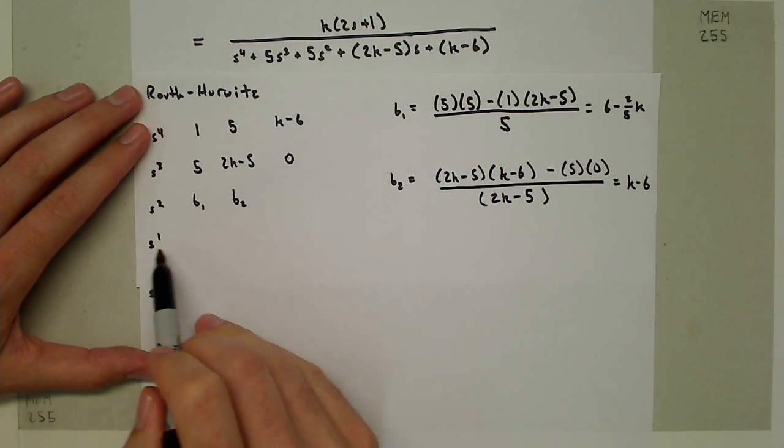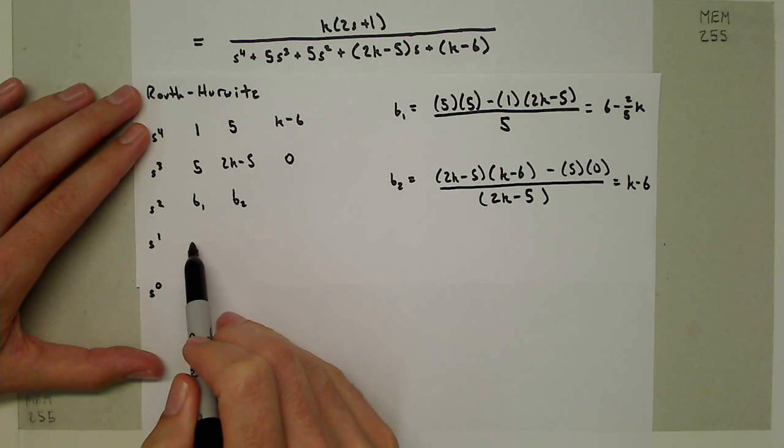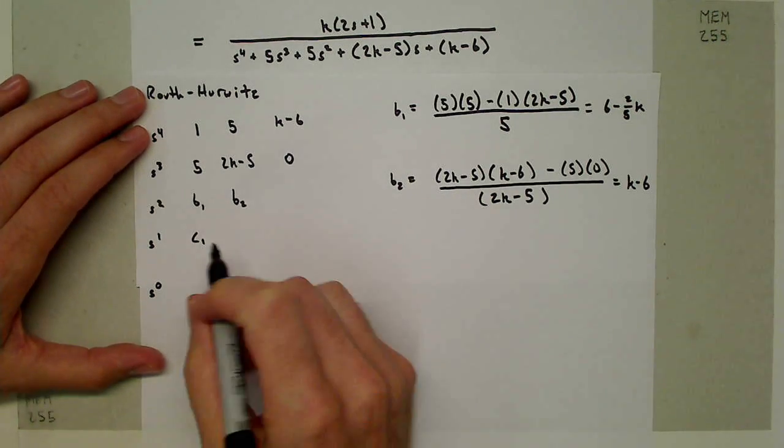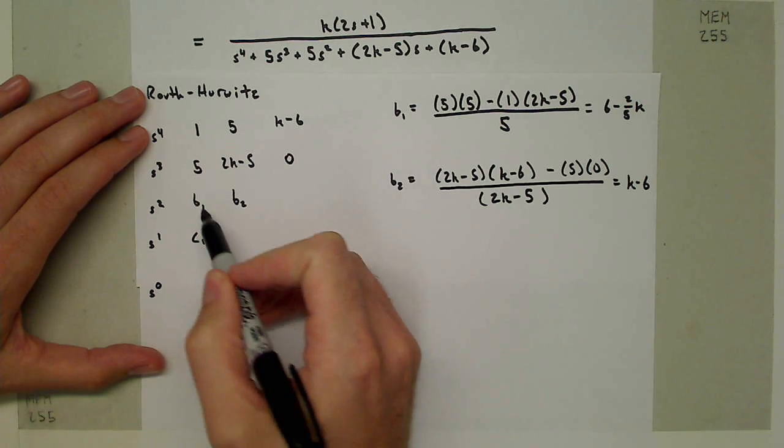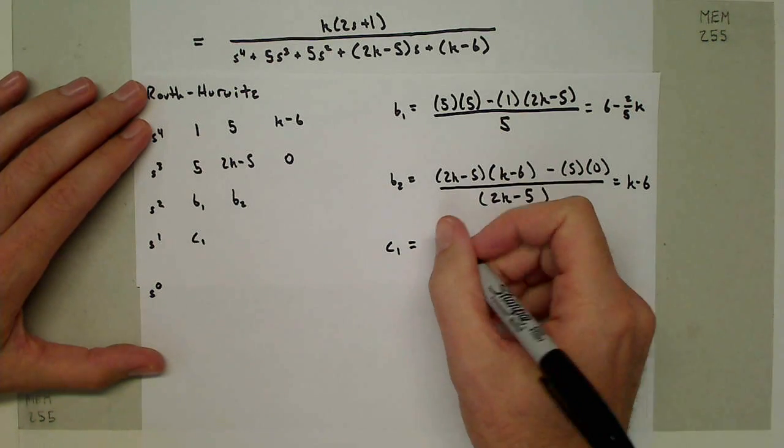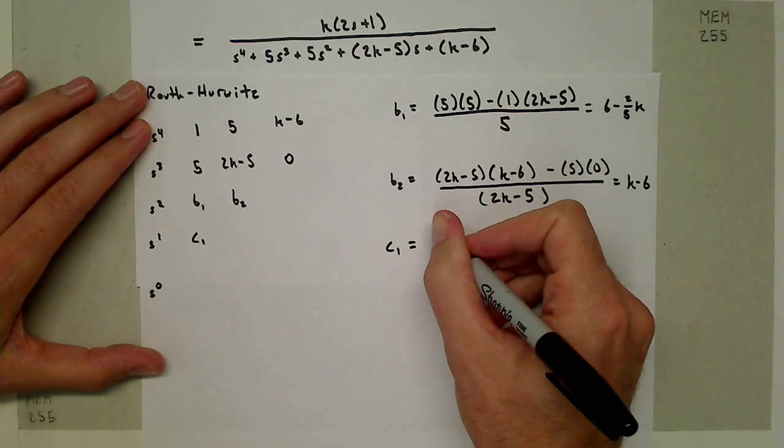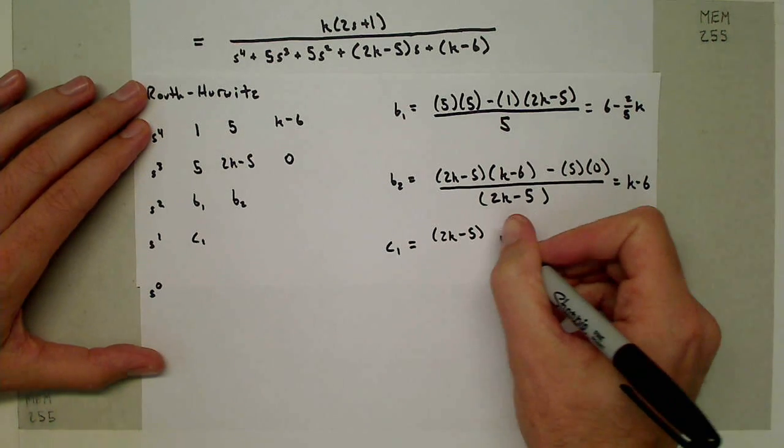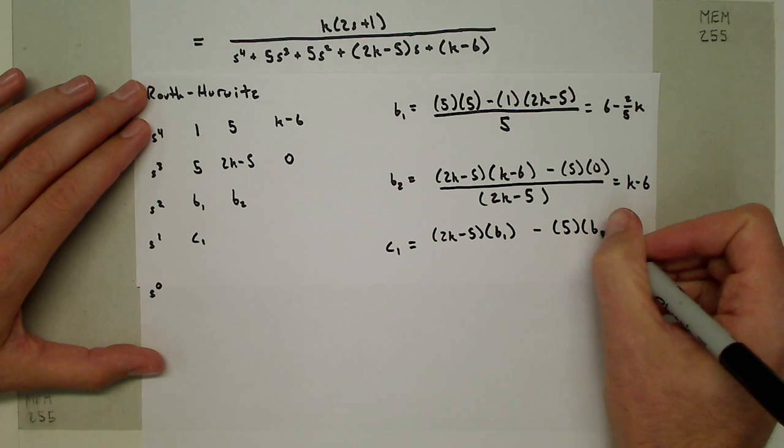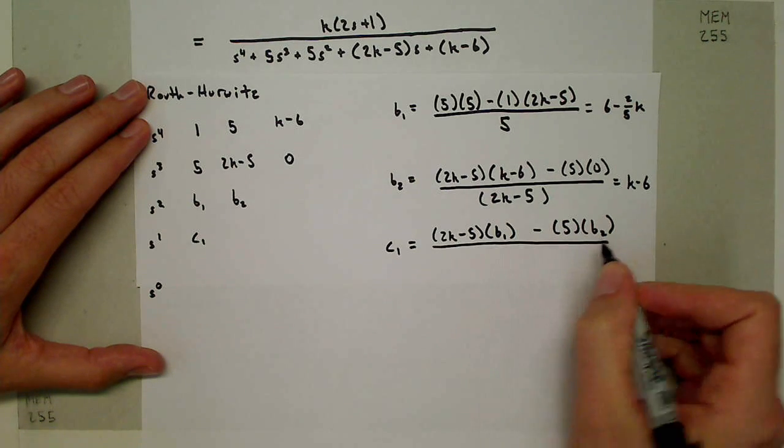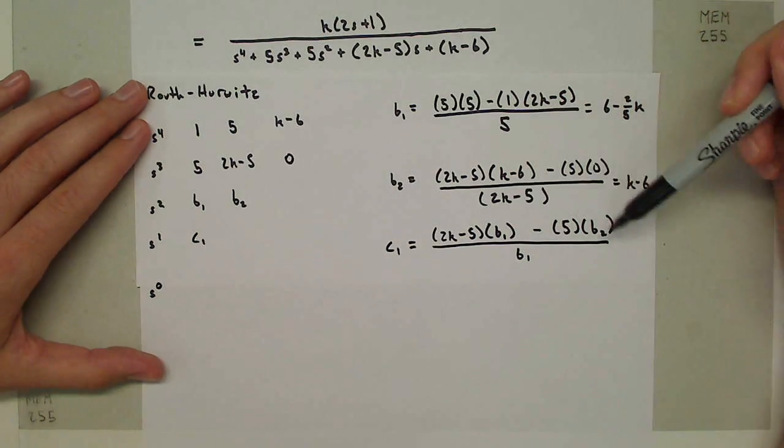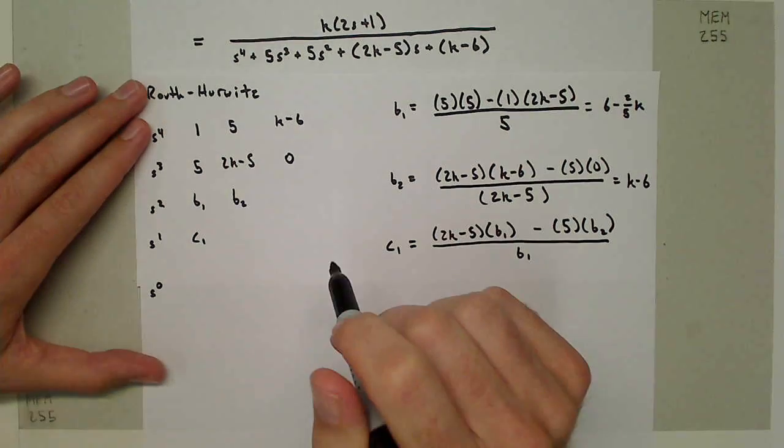We have B1 and B2, now I can solve for this s^1 term. I'll call this C1. C1 is going to be this times this minus this times this, divided by B1. So C1 is going to be equal to (2K-5) times B1 minus 5 times B2 over B1. This ends up being a more complicated term which we'll expand on later.